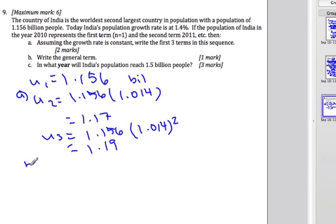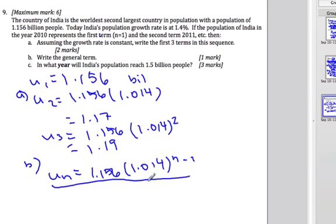It's kind of nice to do the first three terms because then you get an idea of what this pattern is doing. The general term is easy from there. All right so UN. It's geometric. So we start with U1 which we already know, 1.156 and our ratio is 1.014 to the power of N minus 1. All right that was easy. That's already part B. All right there's one easy point.